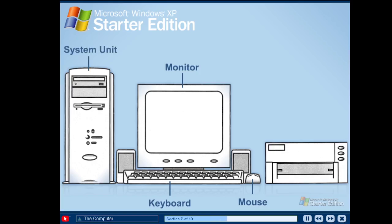The system unit is the central part of the computer. Most system units contain a processor that runs the computer, memory that allows you to access and work with information on your computer more quickly, a hard drive that stores your programs and files, as well as components such as CD and DVD players. Speakers allow you to hear sounds from your computer. For example, your computer can notify you when an email arrives or play your favourite music CD.